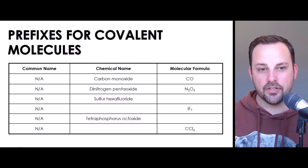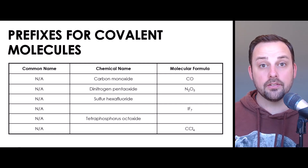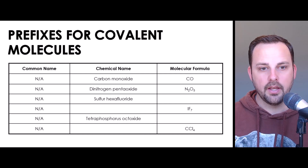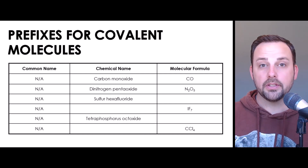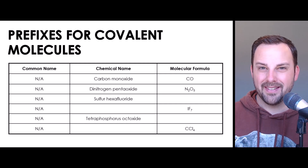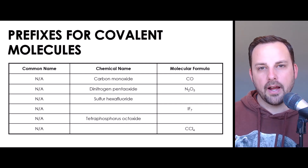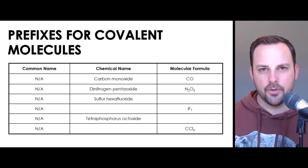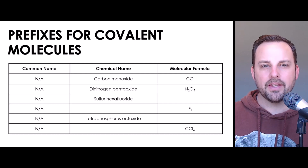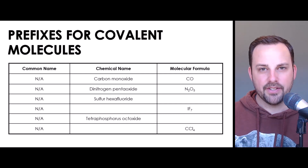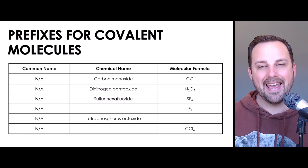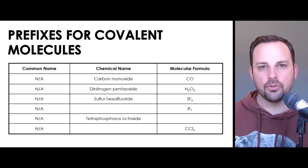What about sulfur hexafluoride? Sulfur is represented with the letter S; it has no prefix, which means it's by itself — there's only one. Fluoride refers to fluorine, which is represented by the letter F; it has the prefix hexa, which means six. So the correct answer is SF6 — sulfur hexafluoride.